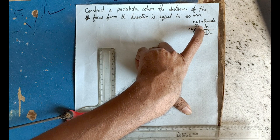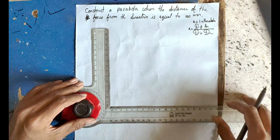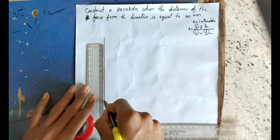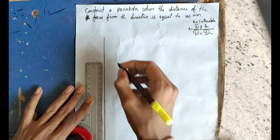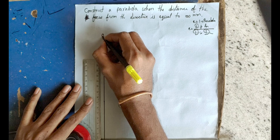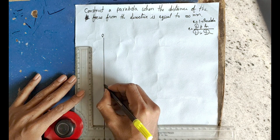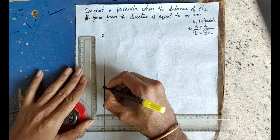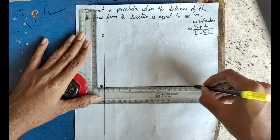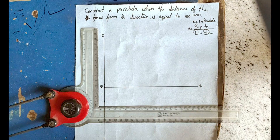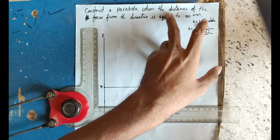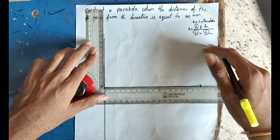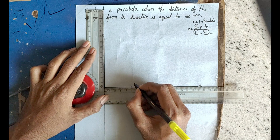First, draw the directrix line — this is the line D-D'. From the directrix, we need to mark the point at a distance of 50 mm, which equals 5 cm. Mark that point at 5 cm from the directrix.